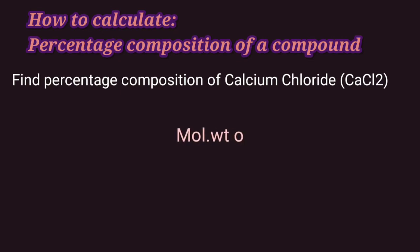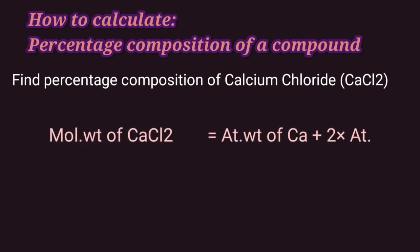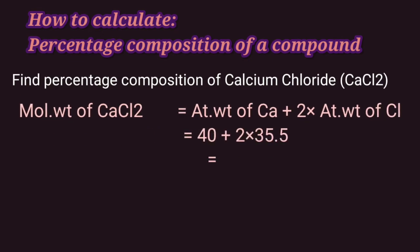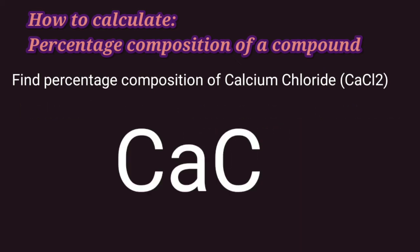Molecular weight of calcium chloride is equal to atomic weight of calcium plus 2 into atomic weight of chlorine atom, as there are 2 chlorine atoms. So we have 40 plus 2 into 35.5, which gives us 111 as the molecular weight of calcium chloride.